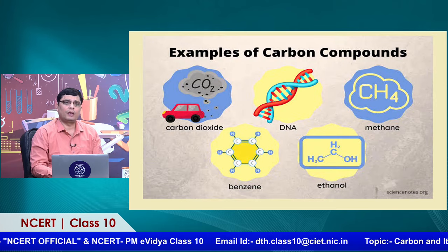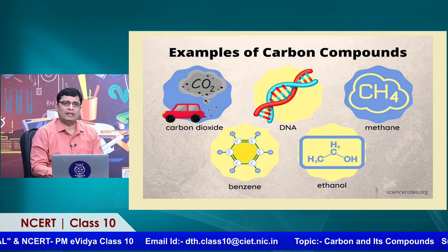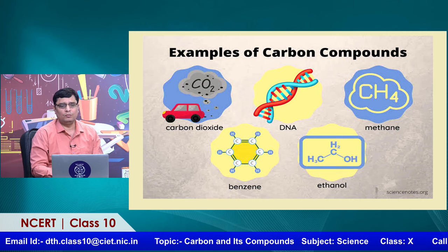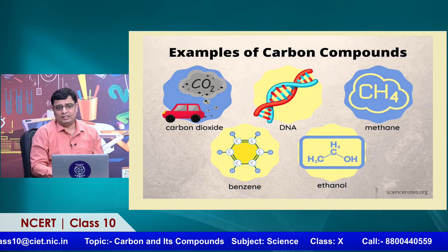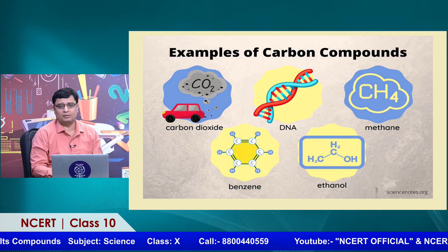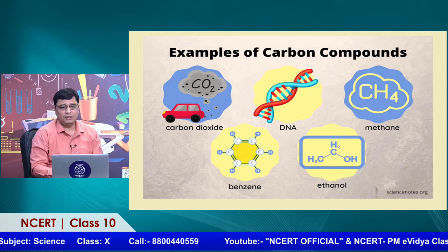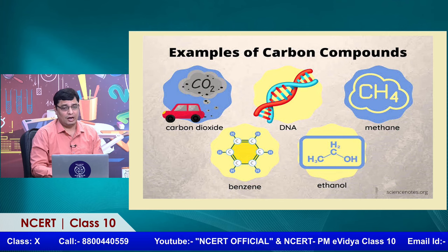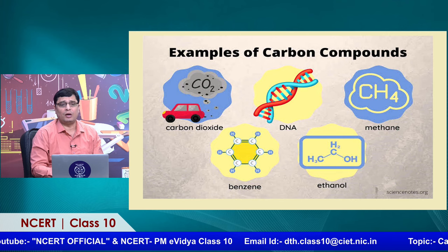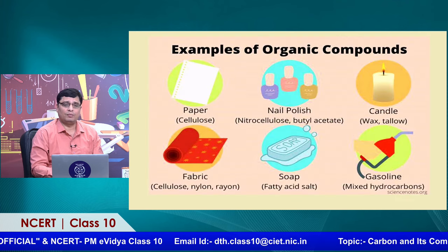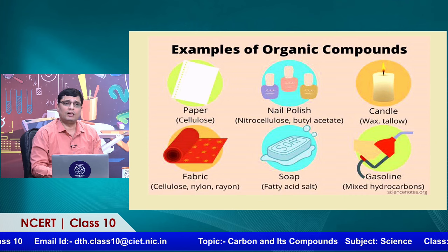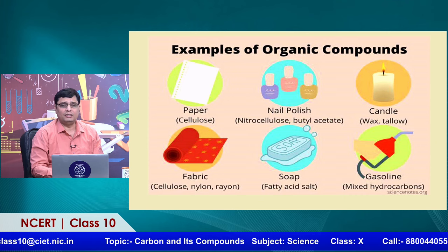Looking at examples of carbon compounds from our surroundings: CO2 (carbon dioxide), DNA — which is the major genetic component of all living things, especially humans — methane, benzene, and ethanol. All these molecules contain carbon either in single form or in a chain of carbon-to-carbon atoms. These can all be considered examples of carbon compounds, also referred to as organic compounds, because carbon is the major component.